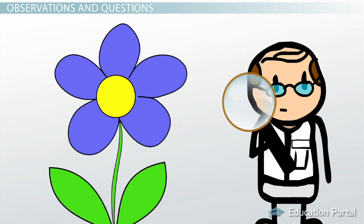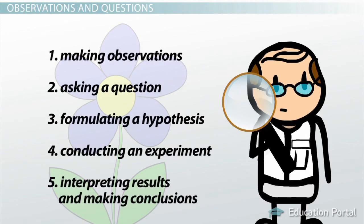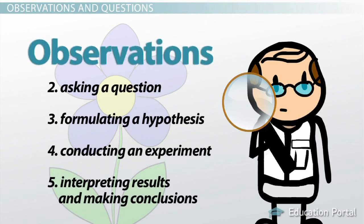Most scientific evaluations begin with someone making observations about something that is occurring in nature or the world around them. Observations are the first step in the scientific method, and they set the foundation that the preceding steps are based on.